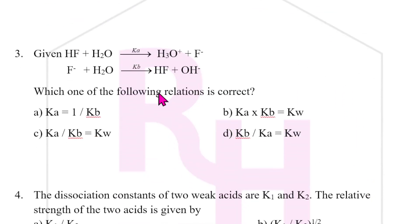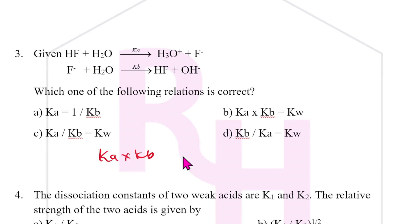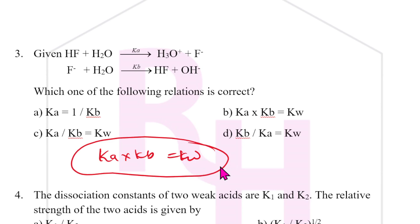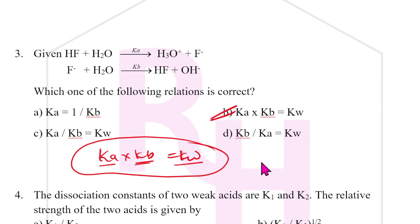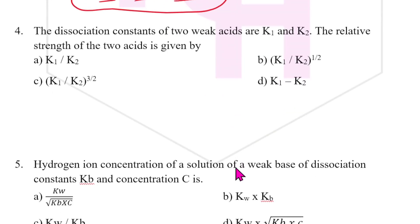Fifth question: HF + H2O → F⁻ + H3O⁺ is given. Which relationship is correct? In all these cases, the relationship Ka × Kb = Kw is correct. The dissociation constant of the acid times the dissociation constant of the base always equals the ionic product of water, Kw. The answer is B.